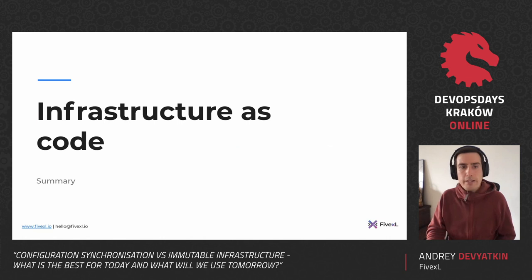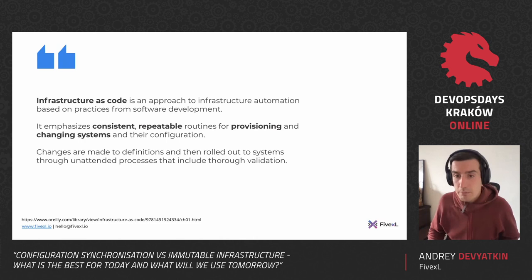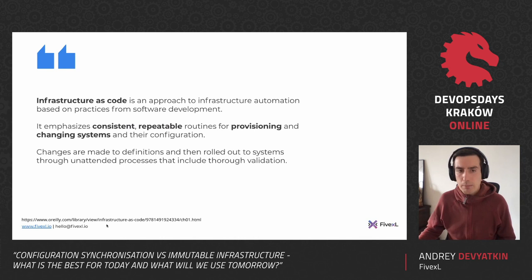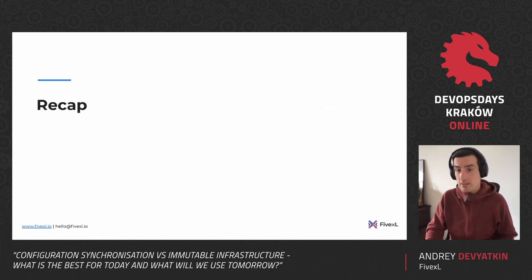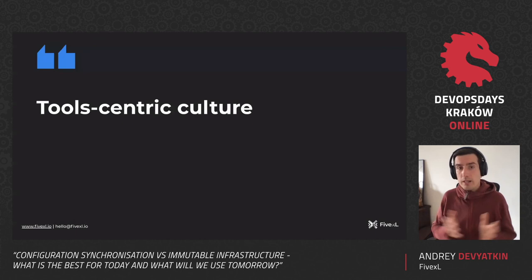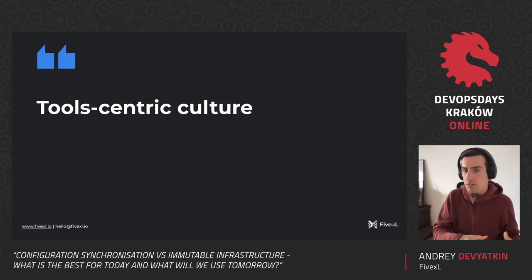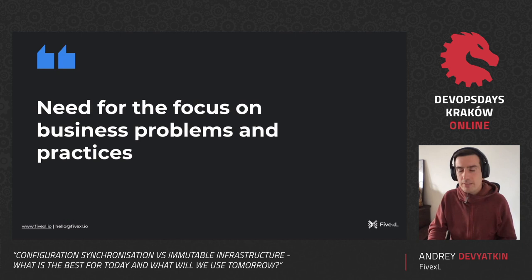I'm running a little bit out of time, so I'm going to skip a couple of slides that give theoretical background. I wanted to do a summary of infrastructure as code and what it means, but in my presentation there's a link that will take you to the free chapter of an infrastructure-as-code book that covers everything I had to say. I'm going to skip through the goals and principles and practices of immutable infrastructure and move to the recap. We started from talking about tool-centric culture and how we need to dig into history and principles and think about the problems business faces.